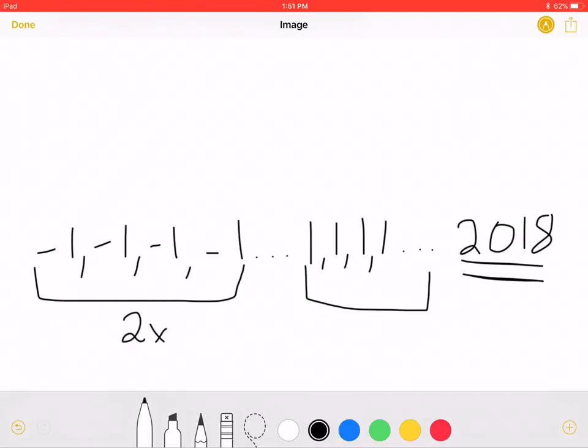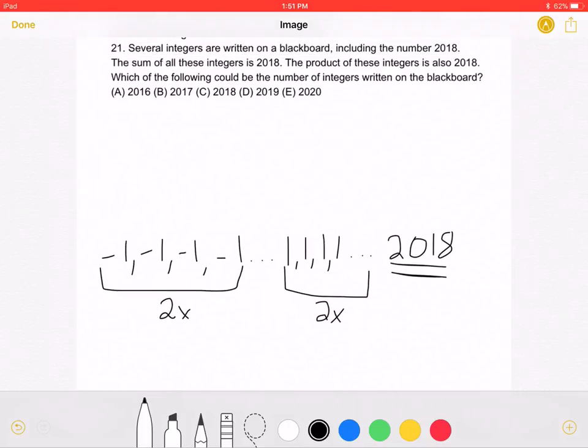Because the sum is 2018, the number of 1s must be equal to the number of negative 1s so they could cancel out. This means that the number of negative 1s must also be equal to 2x. Meaning that, in total, the number of negative 1s plus the number of 1s must be equal to 4x.